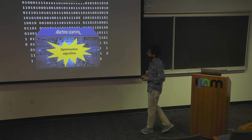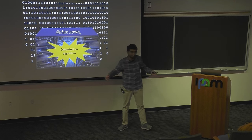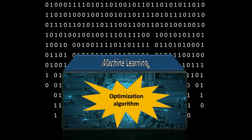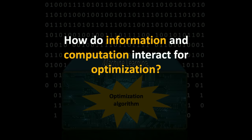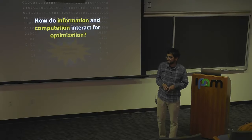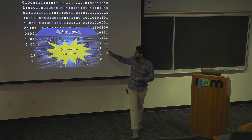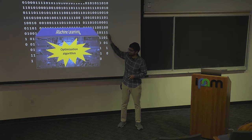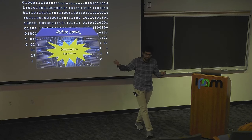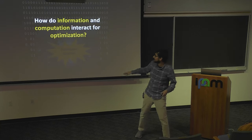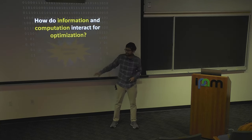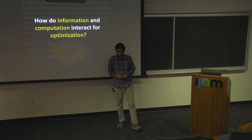If machine learning is some magical box, then at the heart of it really is optimization algorithms. These algorithms are the main workhorses of modern machine learning — the main algorithmic tool that we use. In this talk, we'll try to understand how information and computation interact for optimization. The two most important resources are the computational resources available and the information-theoretic resources — the amount of data or other sorts of information. We'll try to understand the trade-offs between these two resources in the context of continuous optimization problems.